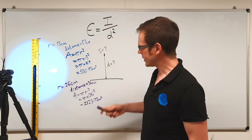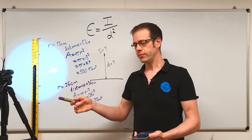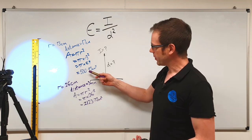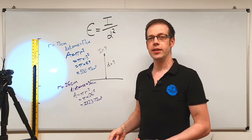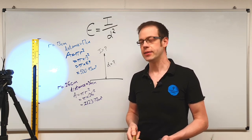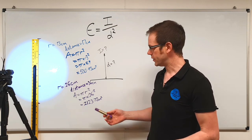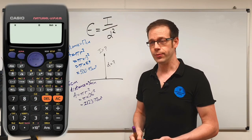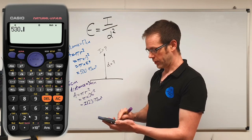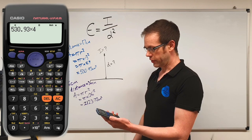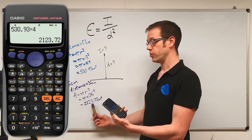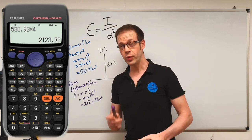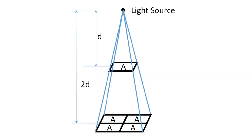So that's interesting — we've doubled the radius and the diameter, but we haven't doubled the area. If it had doubled, we'd expect it to be around 1,060 to 1,061 centimetres squared. So why hasn't it doubled? Actually, it's quadrupled. If we take 530.93 and multiply it by 4, we get 2,123.72. So when we double the distance from the light source to the surface, we don't just double the area being illuminated — we actually quadruple it.